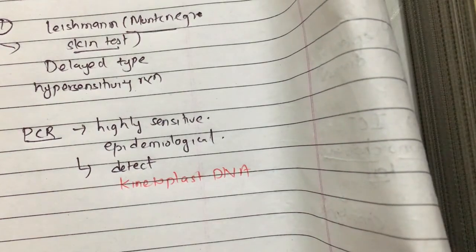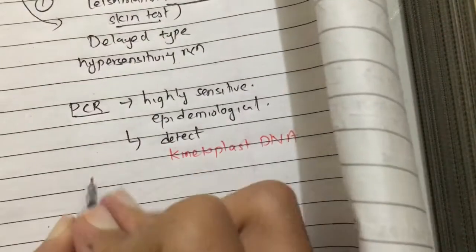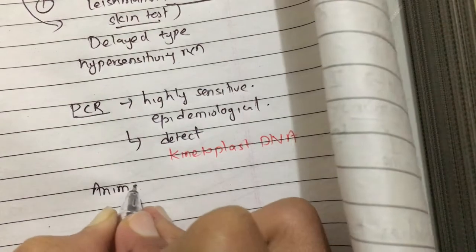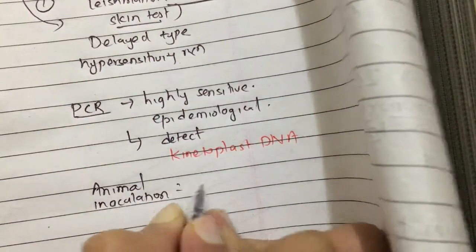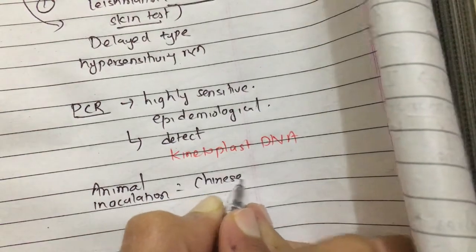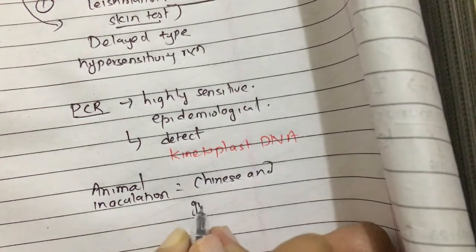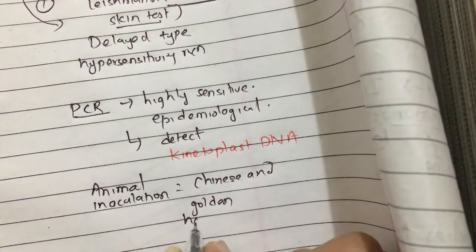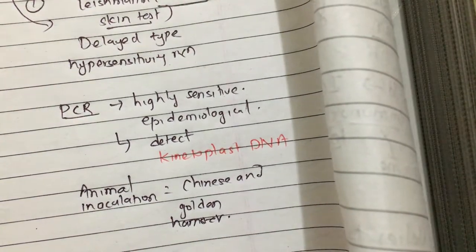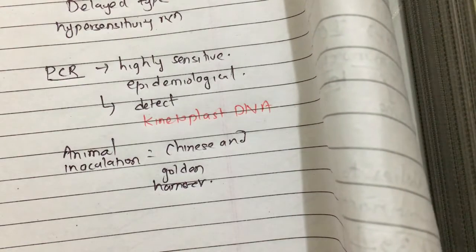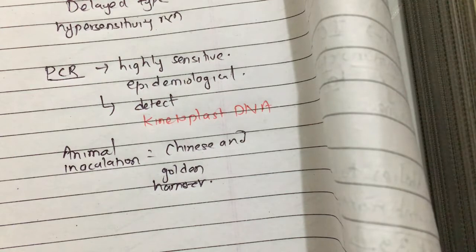We can also inoculate in animals — animal inoculation in Chinese and golden hamster. But we have to remember that the gold standard is the tissue smear, in which we have to demonstrate the amastigote form.